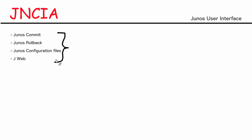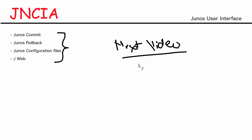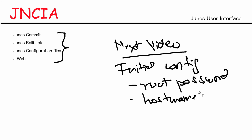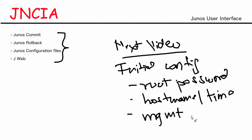That covers all the topics for this video: Junos commit options, Junos rollback, configuration files, and J-Web. In the next video, we're going to start with initial configuration — the first time we get on the device and perform configuration changes. We'll cover setting the root password, configuring the host name, time and date settings, setting up management access, and login classes and login users. Thank you for watching and I'll see you in the next video.